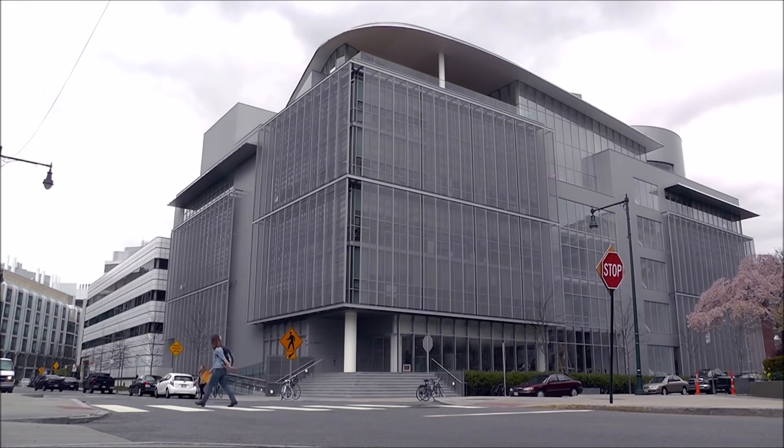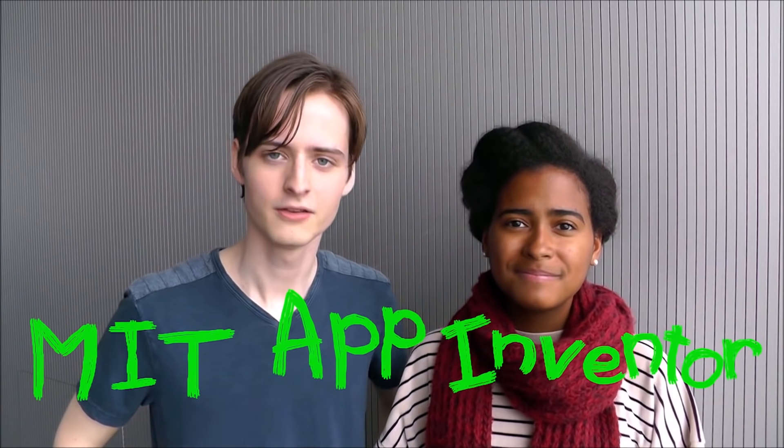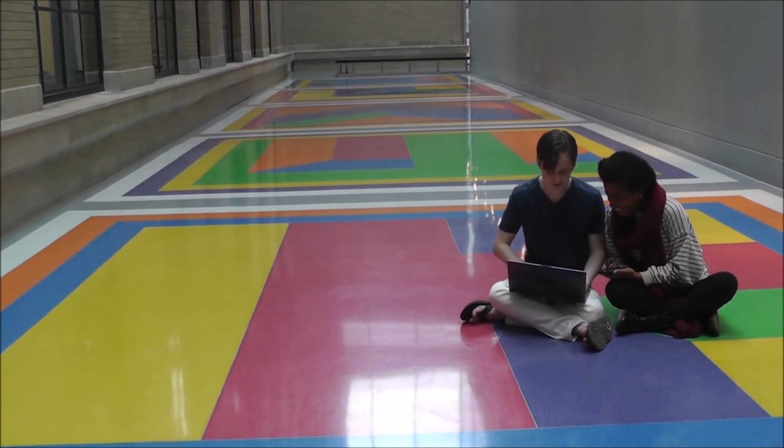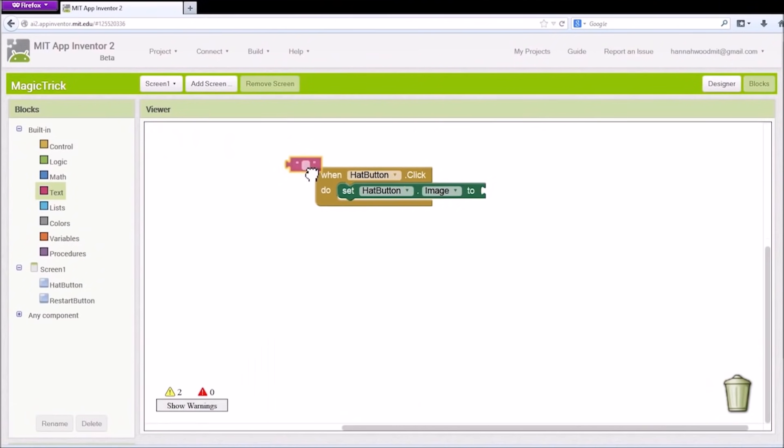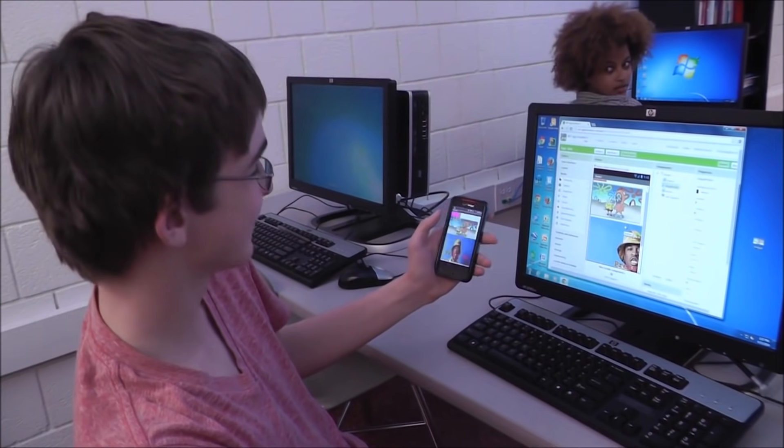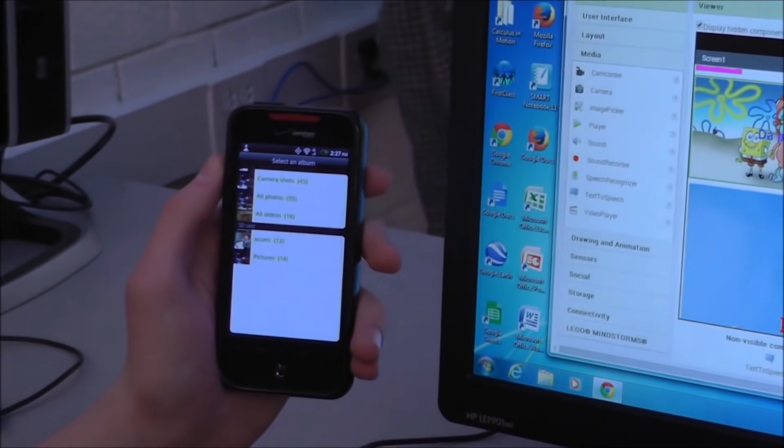So a team here at MIT's Center for Mobile Learning created a tool called MIT App Inventor that allows people of all ages and all levels of coding experience to learn the basics of programming. App Inventor features a drag-and-drop programming interface that allows anybody to create mobile apps for Android devices.